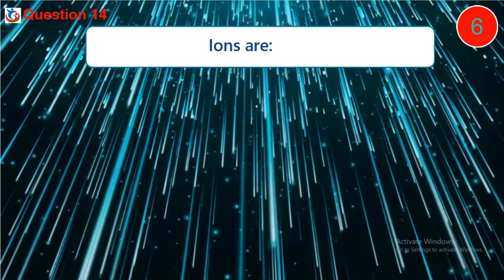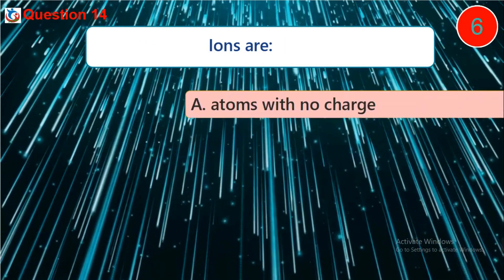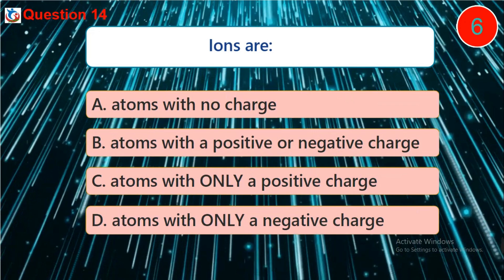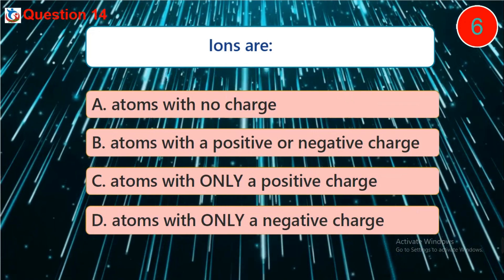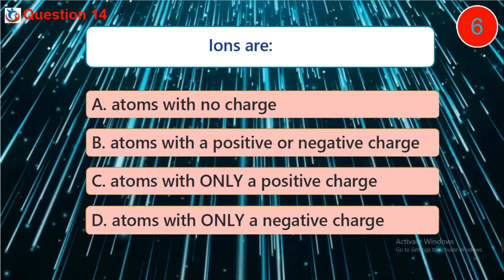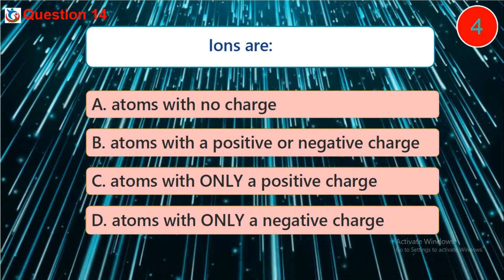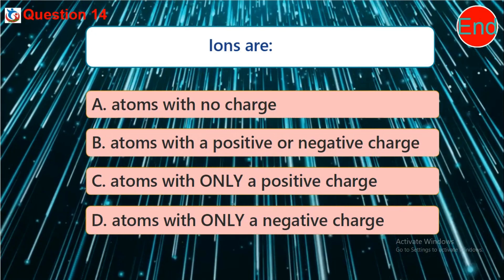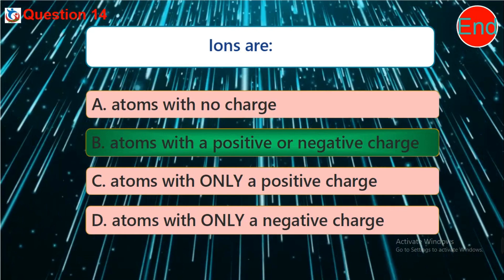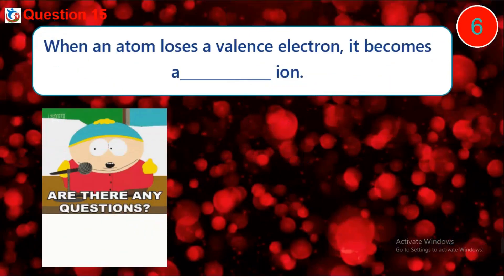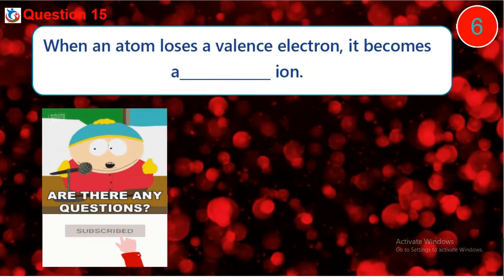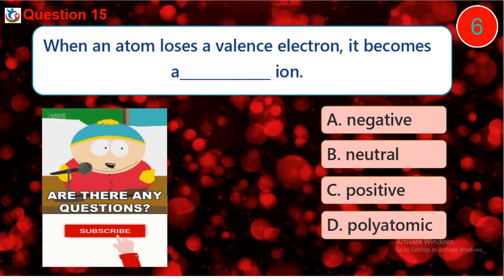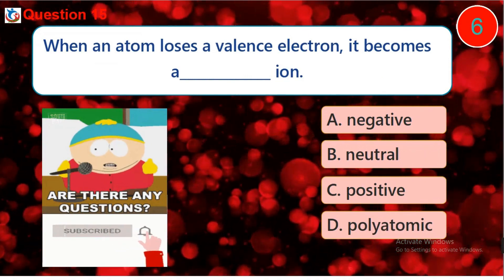Question 14: Ions are dash. A) Atoms with no charge, B) Atoms with a positive or negative charge, C) Atoms with only a positive charge, D) Atoms with only a negative charge. Question 15: When an atom loses a valence electron it becomes a dash ion. A) Negative, B) Neutral, C) Positive, D) Polyatomic.